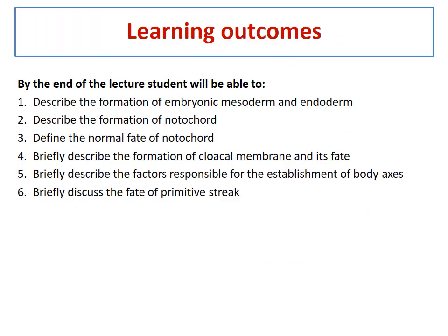The learning outcomes: by the end of the lecture, students will be able to describe the formation of embryonic mesoderm and endoderm, describe the formation of notochord, define the normal fate of notochord, briefly describe the formation of cloacal membrane and its fate, briefly describe the factors responsible for the establishment of body axes, and briefly discuss the fate of primitive streak.